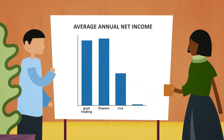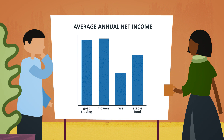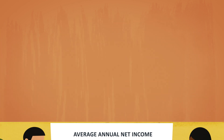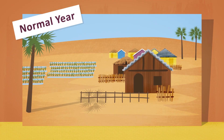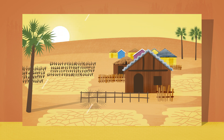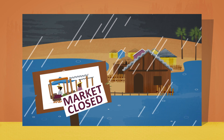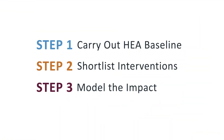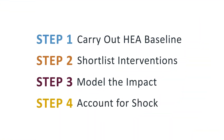We can now compare the effects of all the projects on a poor household's average annual net income. We see that goat trading and flowers would offer the largest increases. However, this isn't the whole story. So far we've only considered a normal year, whereas the real measure of a resilience project is how much it helps households to cope in bad years when they are faced by shocks such as drought, floods, and market closures. This is especially true in a time of climate change. So the fourth step is to model how effectively each project would buffer poor households against the effects of a shock.